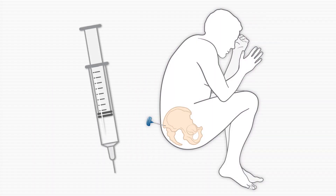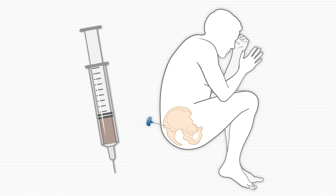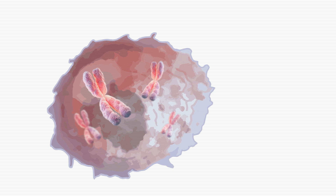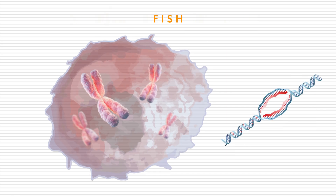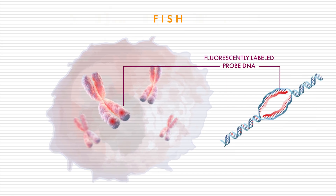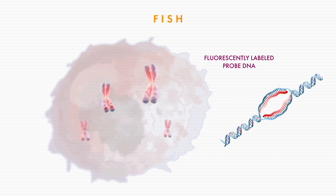Testing for high-risk disease features should be done on bone marrow biopsy samples at the time of diagnosis and any time the disease relapses. To check for structural changes in the DNA of myeloma cells, specialists perform a process known as karyotyping, using fluorescence in situ hybridization, or FISH. FISH uses fluorescent probes that bind to specific DNA sequences to visualize the presence or absence of these sequences within the chromosomes of the myeloma cells.